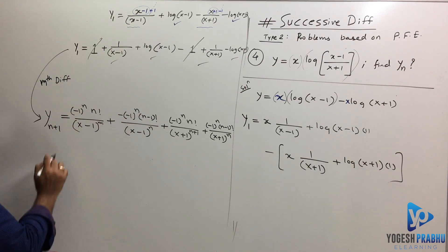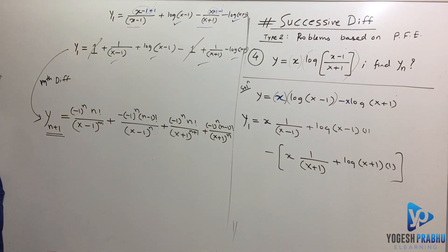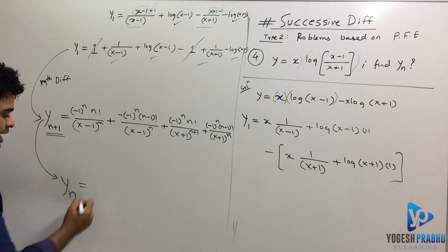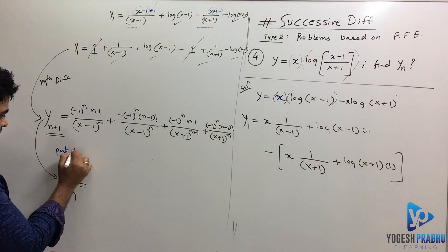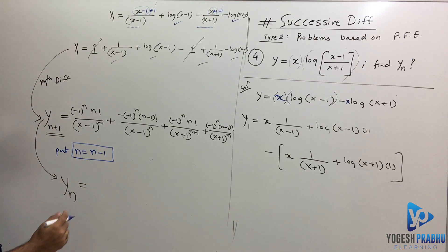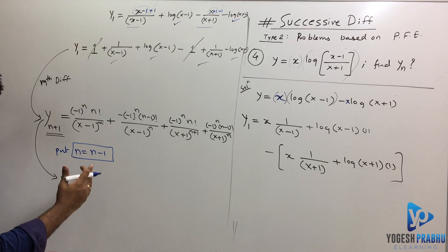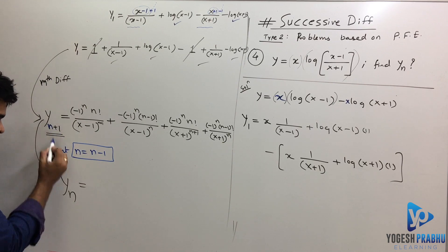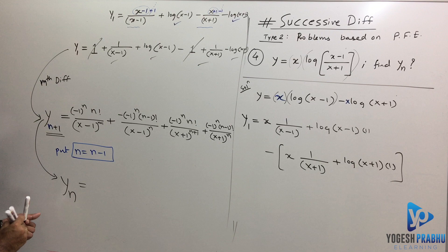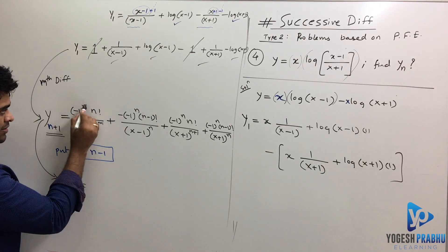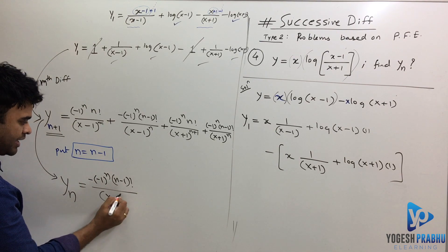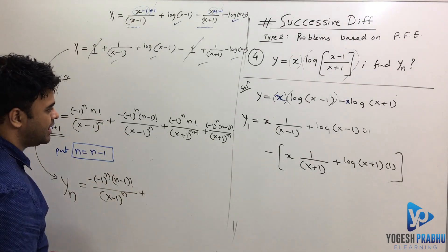But the question asks for yₙ, not yₙ₊₁. To restore from yₙ₊₁ to yₙ, substitute n = n−1 throughout the entire expression on both sides. As soon as you do that, everything reduces: on the left n+1 becomes n, giving yₙ. On the right, replace every n with (n−1): so (−1)ⁿ becomes (−1)ⁿ⁻¹, and n! becomes (n−1)!, and exponents reduce accordingly.